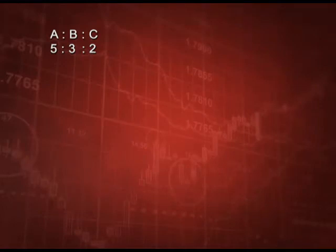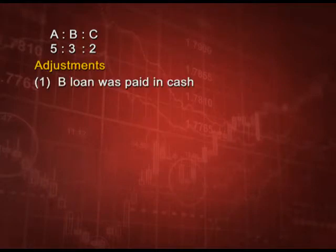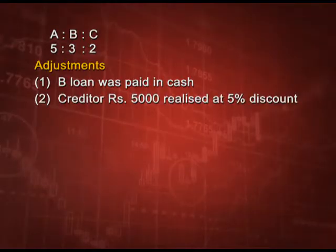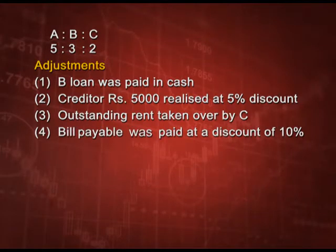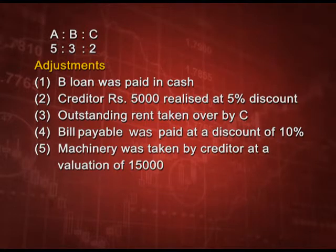In this question, A, B, and C are sharing profits in the ratio of 5:3:2. Adjustments: B loan was paid in cash — first B loan will be transferred to realization account, then paid in cash. Second, creditors of rupees 5000 realized at 5 percent discount, meaning creditors will be paid 5 percent less. Outstanding rent will be taken over by partner C. Bill payable is paid at a discount of 10 percent. Machinery was taken by a creditor at a valuation of 15,000; since creditors are 20,000, the balance 5,000 will be paid at 5 percent discount.